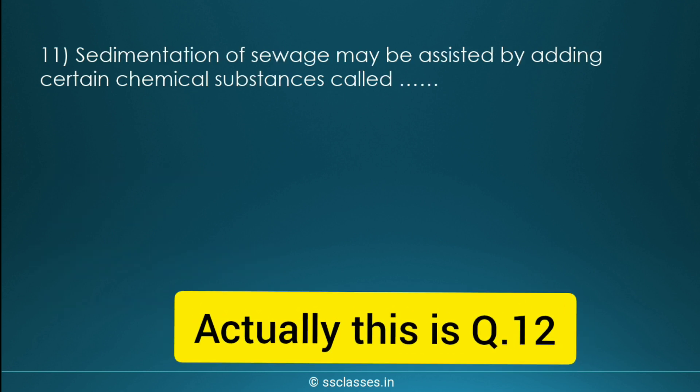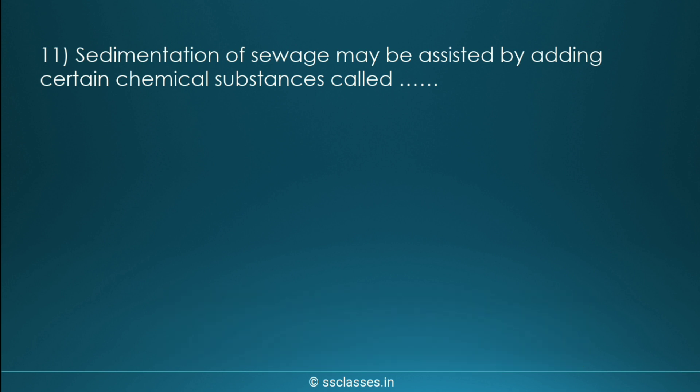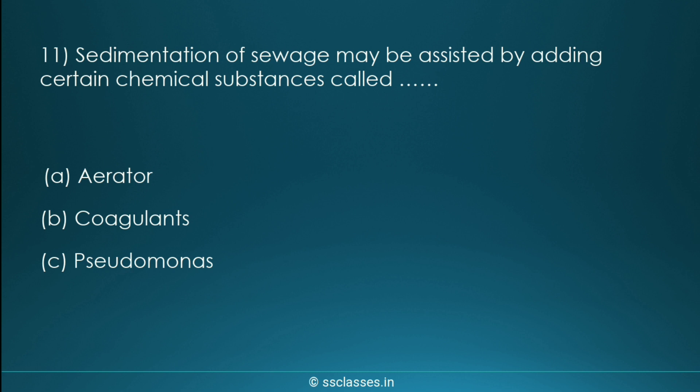Question twelve: sedimentation may be assisted by adding certain chemical substances called what? Options are aerator, coagulants, pseudomonas, or Zoogloea. The correct answer is coagulants. Note that pseudomonas and Zoogloea are microorganisms used in aerobic treatments, and aerator is the first step of municipal wastewater treatment.